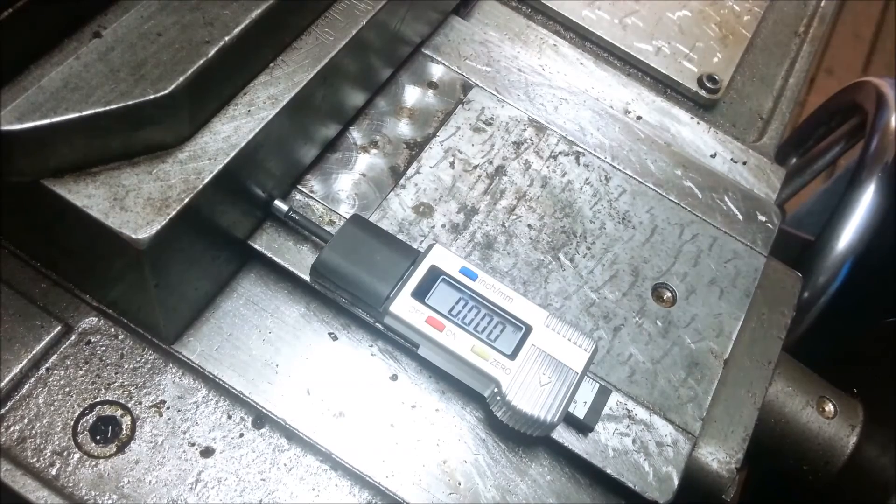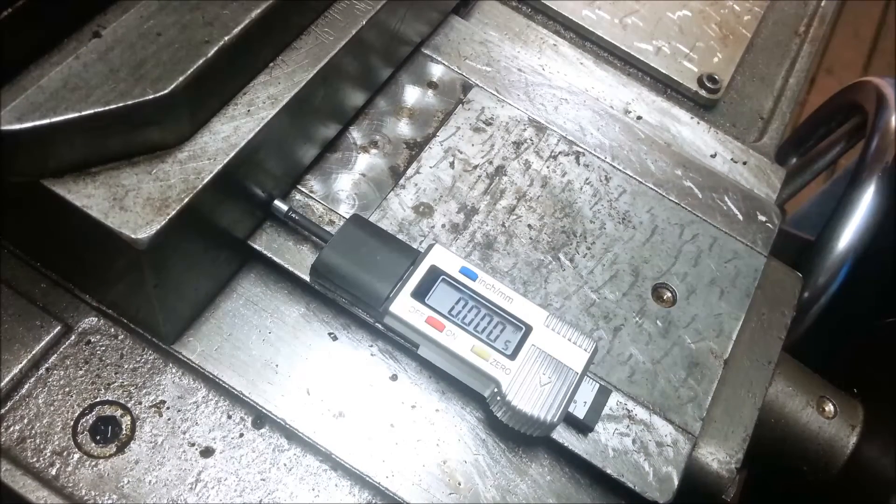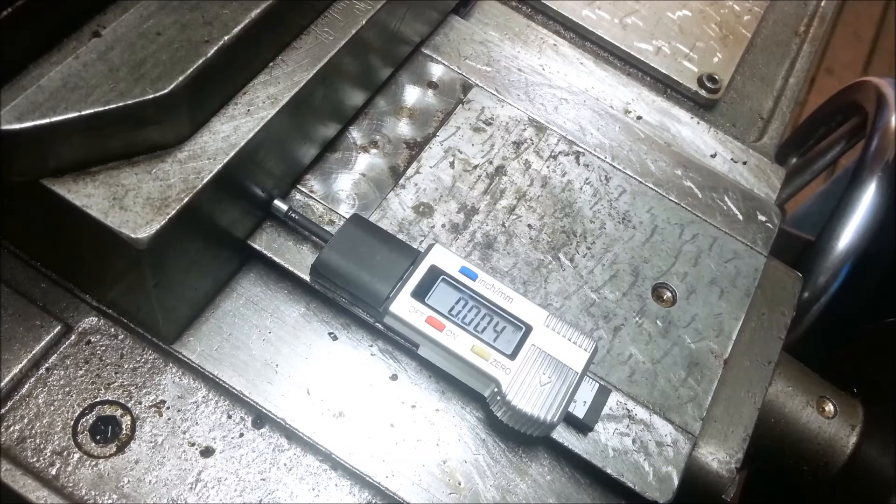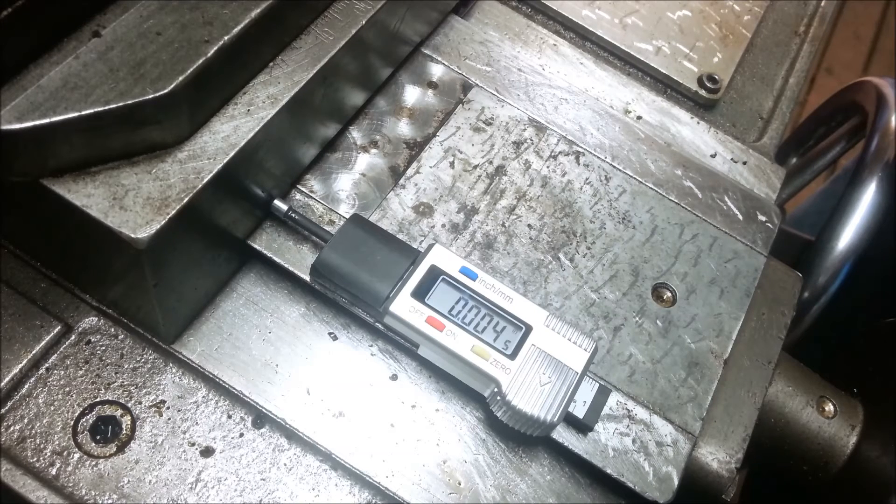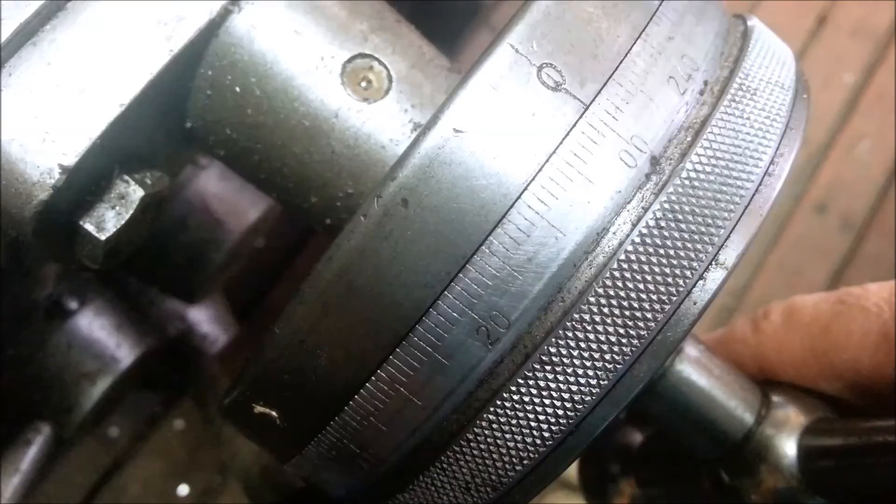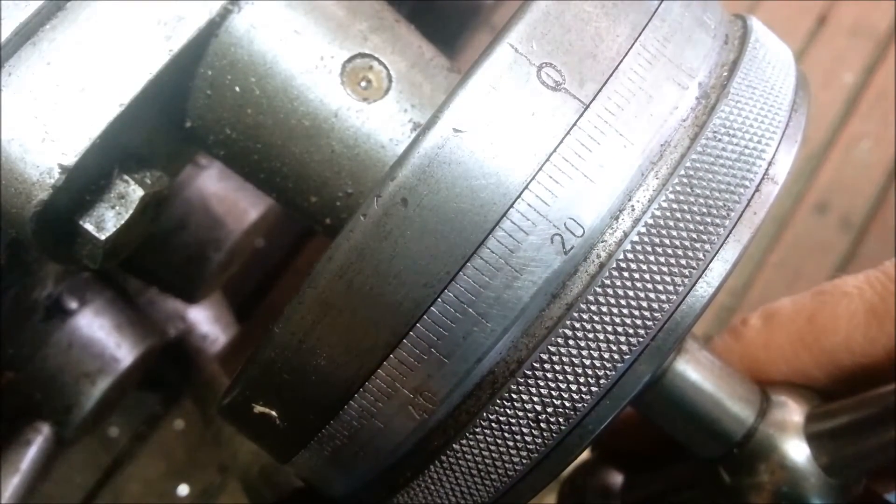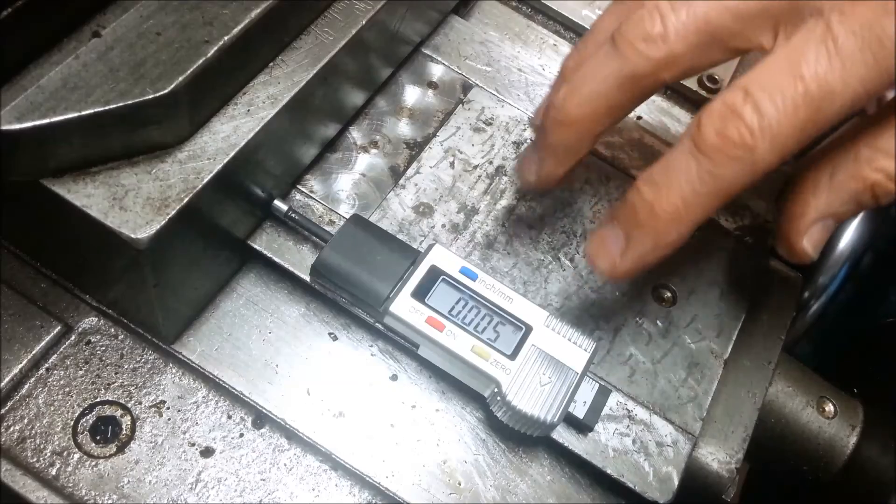Now as I turn the cross slide in, say 10 thou, you're going to get 5 thou movement. Here's the 10 thou movement on the dial, and it's very accurate.